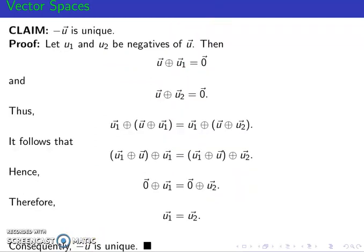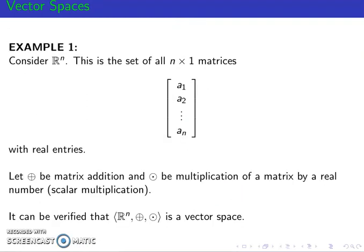We now show here other different types of vectors. Example number 1. Consider r to the n. So the r to the n is the set of all n by 1 matrices whose components are a1, a2, up to a n with real entries. So ang mga components nito ay mga real numbers because we are on r to the n.